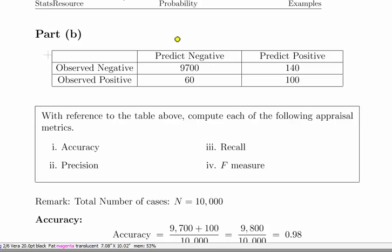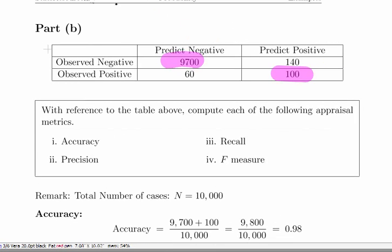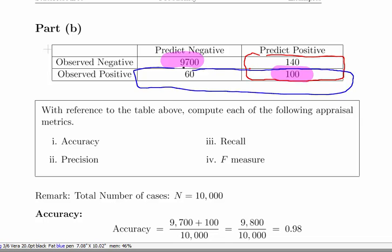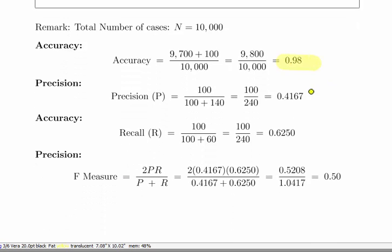Moving on to part B, we have something similar here. Again, the accuracy we can tell very quickly to be 98%. It didn't change that much. I just looked at various different scenarios here. In this case, there are 240 positive predictions, but only 100 are correct. Whereas we actually observed in the training data that 160 should have been identified as correct, but we missed 60 of them.